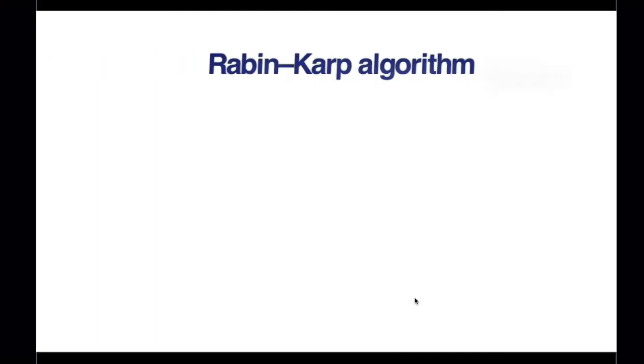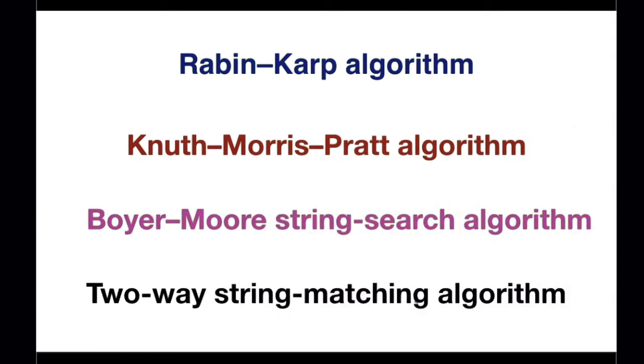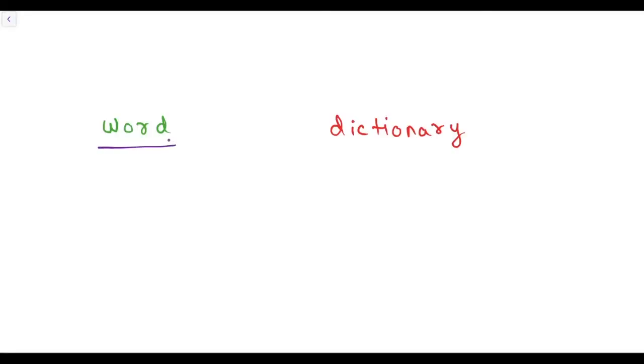There are many algorithms and data structures available to index and search strings inside a text. Some of them are included in the standard library but not all of them. The trie data structure is a good example of one that isn't. Let word be a string and dictionary be a large set of words. If we have a dictionary and we have to know if a word is inside a dictionary or not, then trie is a data structure that can help us.